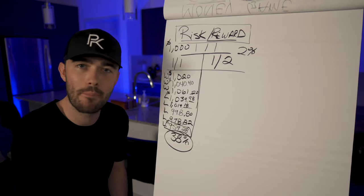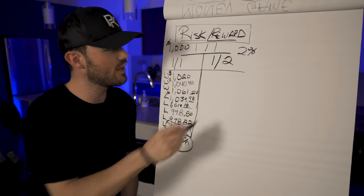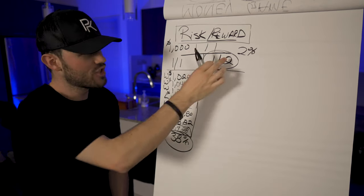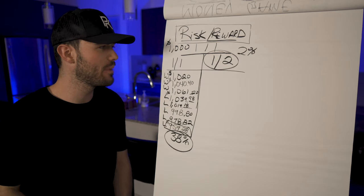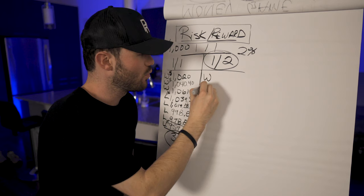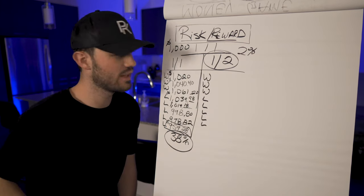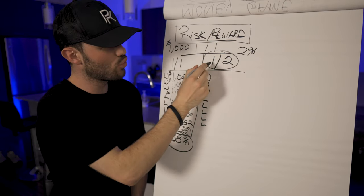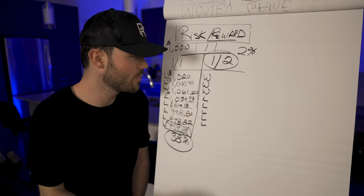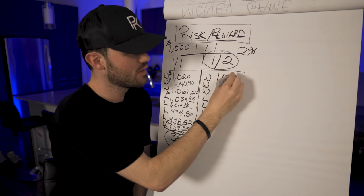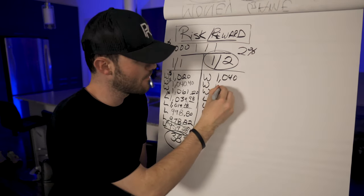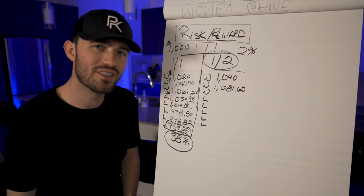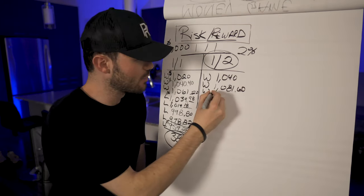Now I want to show you this minor tweak — a one-to-two risk-reward ratio, always making sure your risk is exactly half your reward. This could be one-to-three, one-to-four, one-to-five — the higher, the better. Same example: win three, lose five. First trade with a two percent risk and four percent reward brings us to one thousand forty dollars. Second win: one thousand eighty-one dollars and sixty cents.